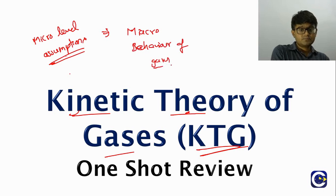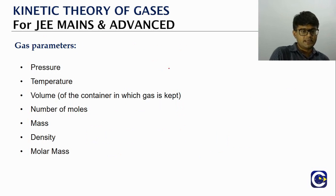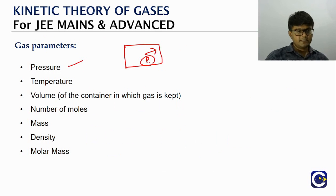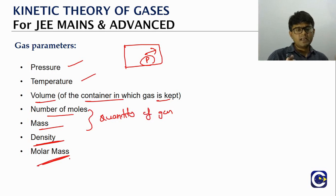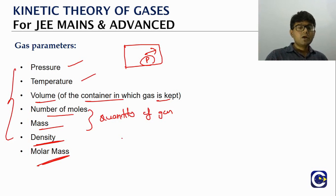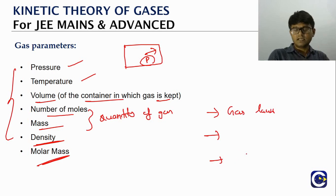Macro behavior refers to gas properties or parameters: pressure (gas molecules exert pressure on the walls of the container), temperature, volume (the volume of the container), number of moles or mass representing the quantity of gas, density, and molar mass. These are the macro properties of the gas. We will broadly look at three things in terms of macro behavior.